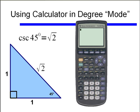One word of warning: if I type sine of 45 without the closing parentheses and then use the reciprocal button, I get something that's not correct. The problem is that the reciprocal is then only affecting the 45. We need the reciprocal button to affect the entire expression sine of 45 degrees, so make sure you always use the closing parentheses.